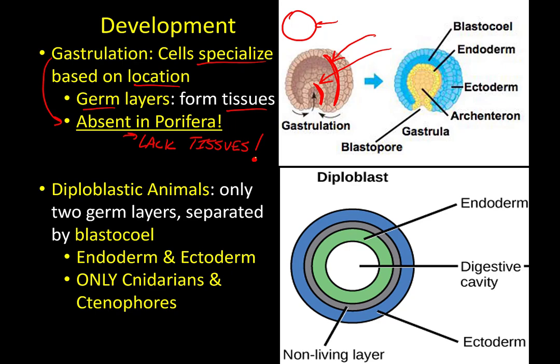Our earliest animals likely had only this inner and outer layer of cells — just this simple gastrula. We still have some of those phyla today: the cnidarians and ctenophores. Because they only have two germ layers in their embryos, we say they are diploblastic — 'di' meaning two. Those two germ layers are separated by the blastocoel, the empty space previously inside our beach ball, filled with non-living material such as fluid.